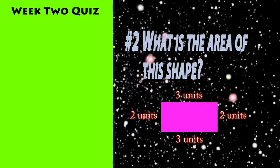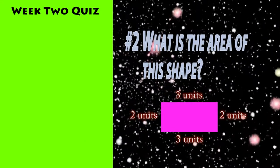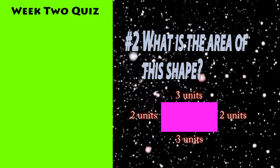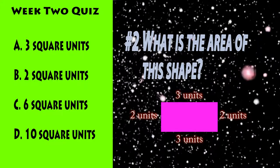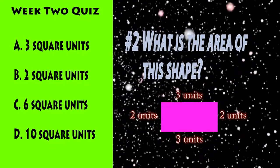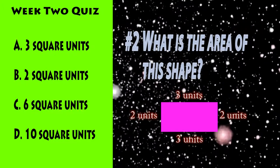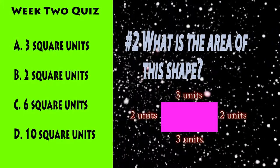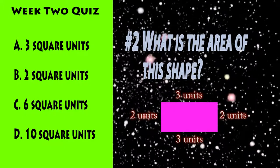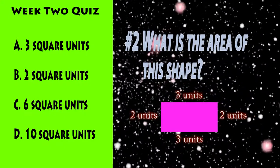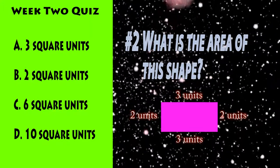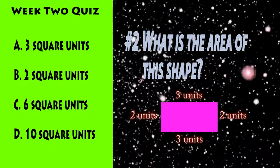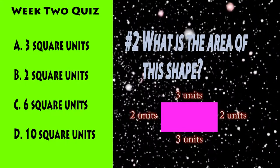Number 2. What is the area of this shape? A: 3 square units, B: 2 square units, C: 6 square units, or D: 10 square units. What is the area of this shape?